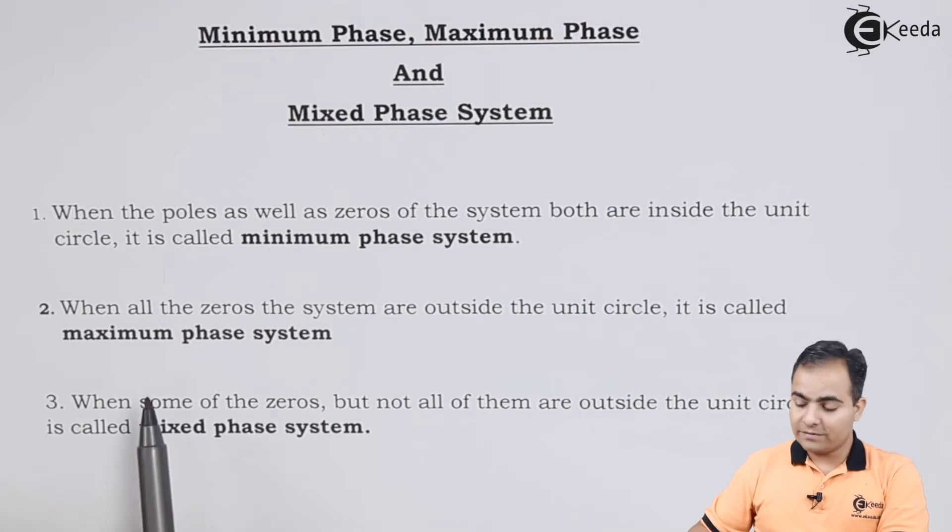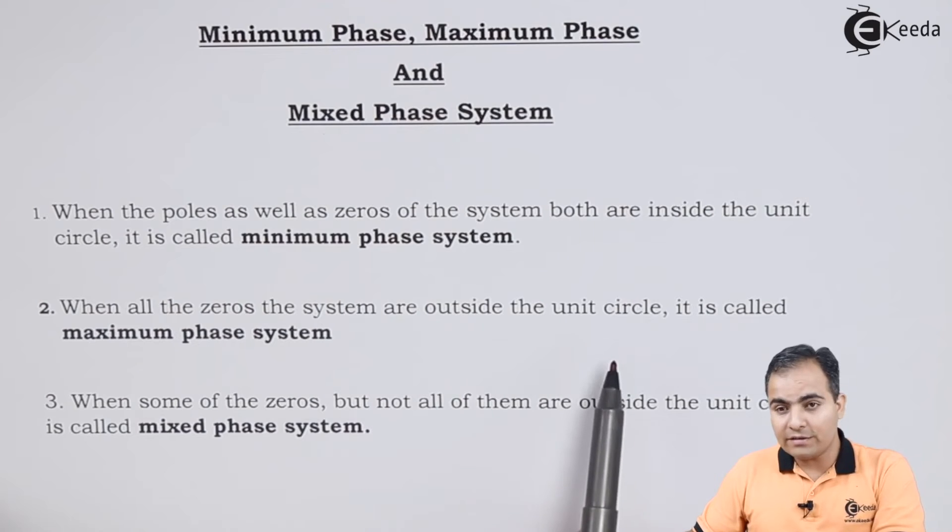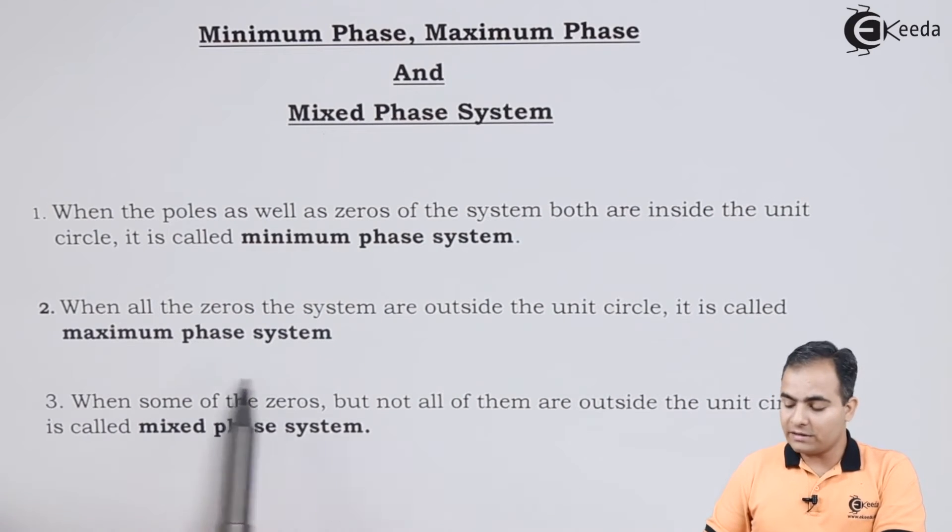The second definition is: when all the zeros of the system are lying outside the unit circle, it is called a maximum phase system.